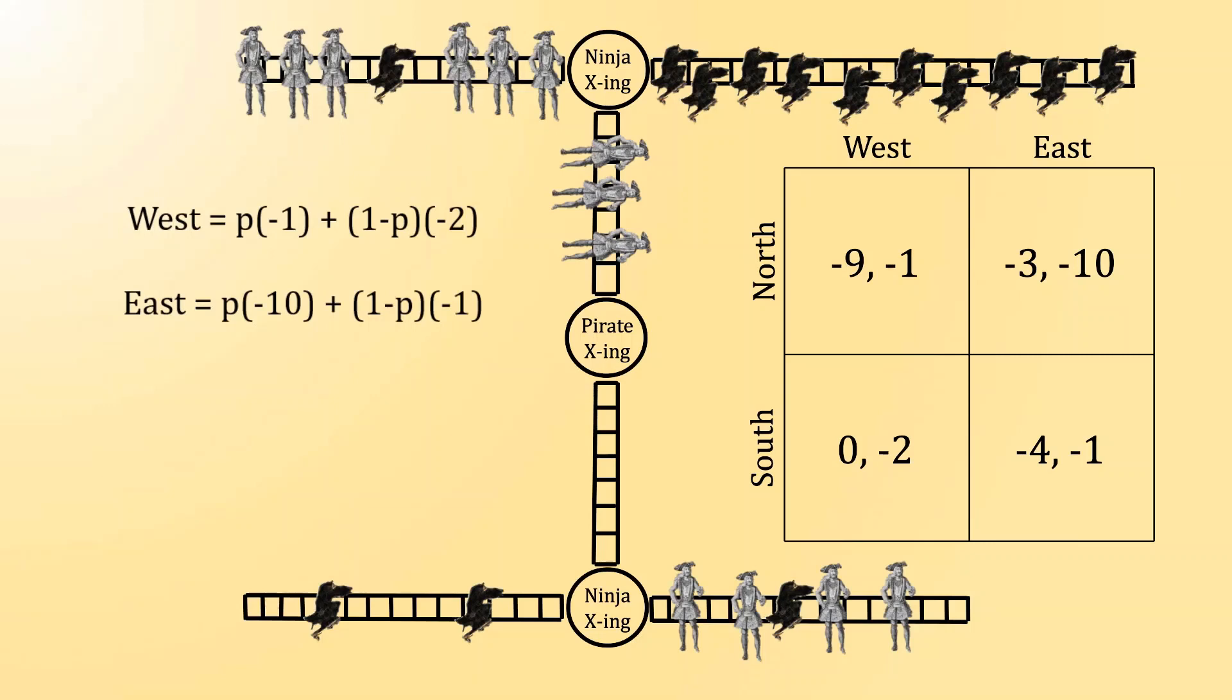If the ninja selects west, then with probability p, we will have one individual ninja hit, and with probability 1-p, we will have two ninjas hit. That's looking at the left side of the trolley tracks.